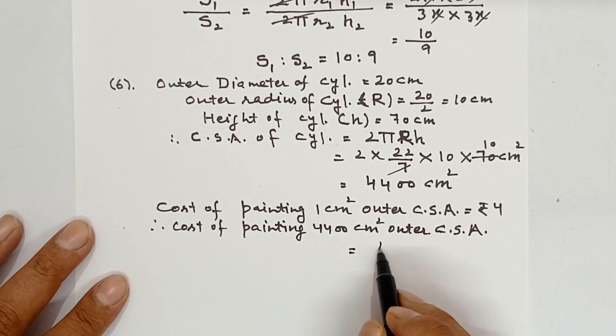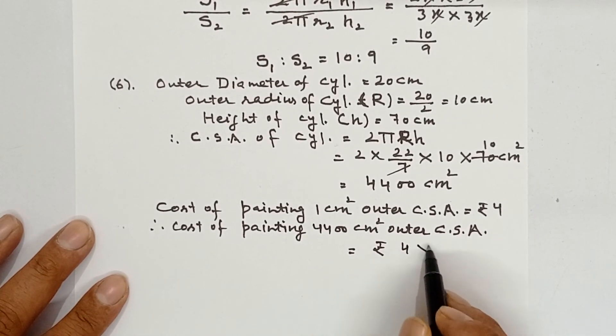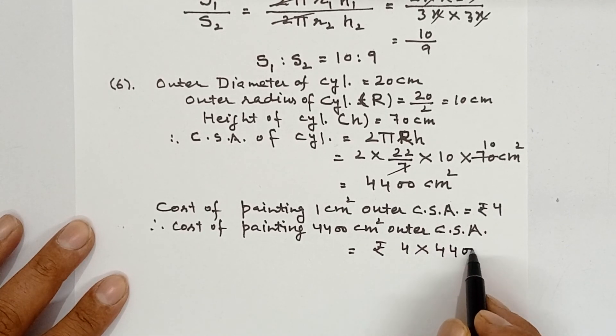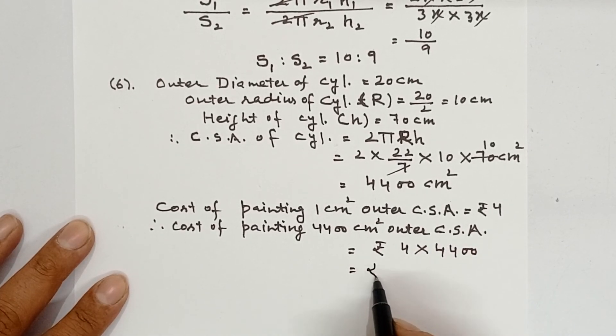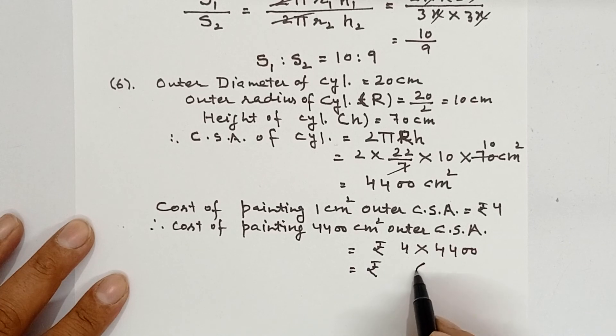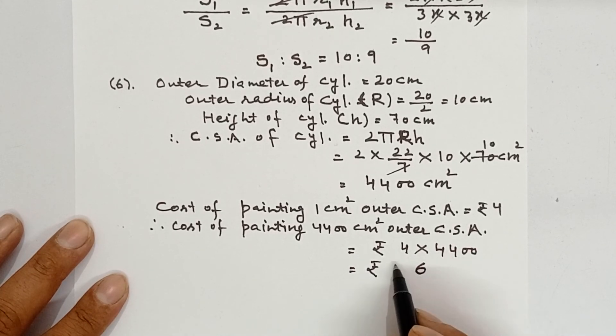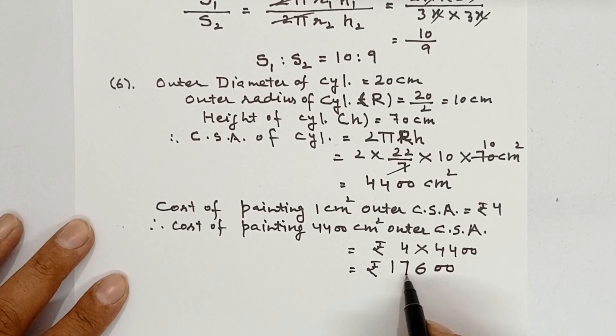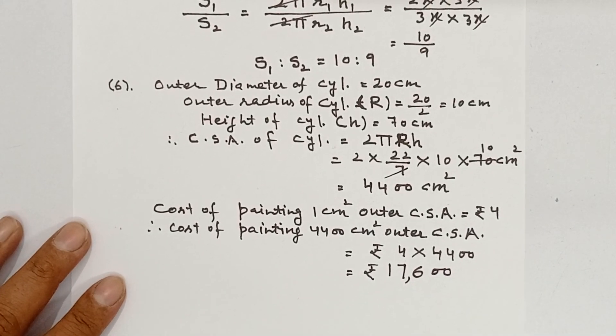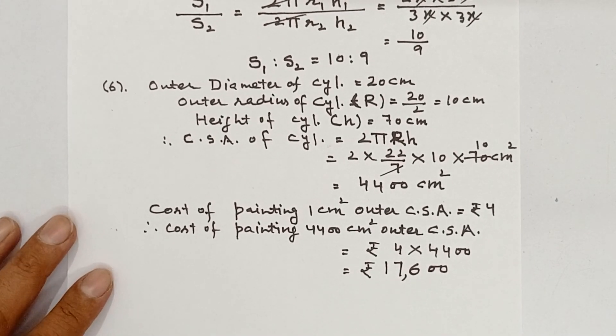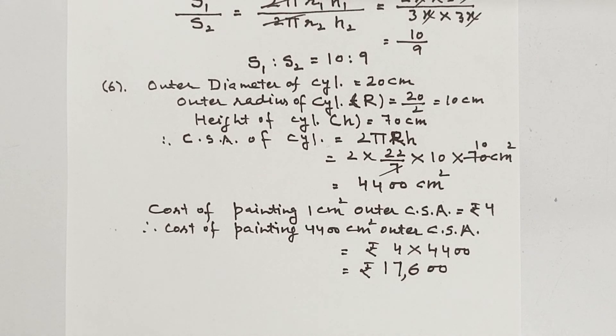We will multiply Rs 4 with 4400. How will we multiply? 4×4 is 16, 1 is carry, 4×4 is 16 and 1 is 17. So it is Rs 17,600. Hope you have understood both the questions. Thank you.